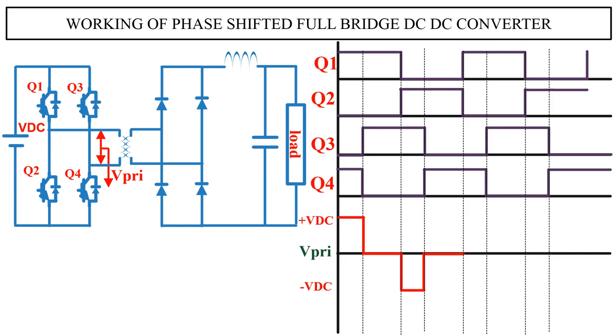And this completes one switching cycle. Now similarly we can draw for the next switching cycle also. This transformer voltage is rectified using a diode rectifier to get the required DC output voltage.